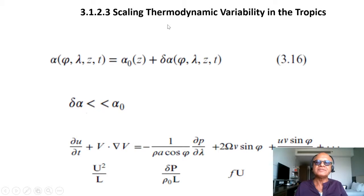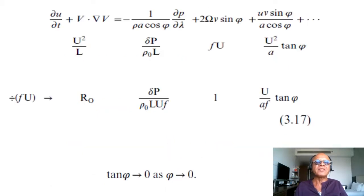Moving into the scaling of thermodynamic variability in the tropics, you can take any variable and write it as the background state plus the perturbation. Of course, the assumption of these kinds of splits is always that the perturbation is much smaller than the background state. Going back to our momentum equation, look at the scales: U is the horizontal scale of motion, so U is order 10 m/s. L is order 1000 meters. U²/L equals this pressure gradient term, which is written as δp/(ρ₀L). This is the Coriolis term and this is the so-called geometric term.